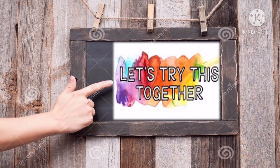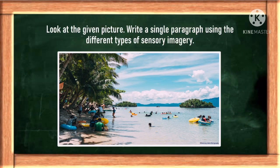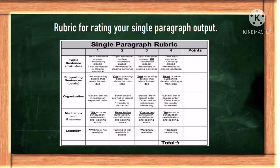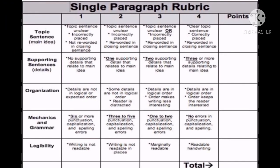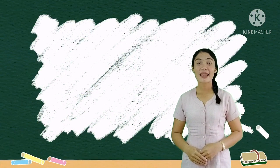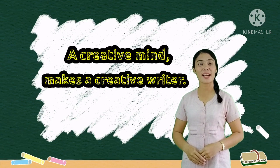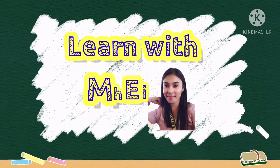Let's try this together. Look at the given picture and write a single paragraph using different types of sensory imagery. Your paragraph output will be rated using the following rubric. That's it for today! Once again, this is Ma'am Meg saying: a creative mind is what makes a creative writer. I'll catch up with you on our next lesson — watch out!